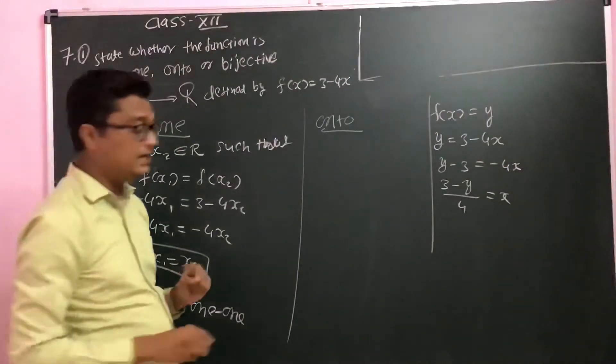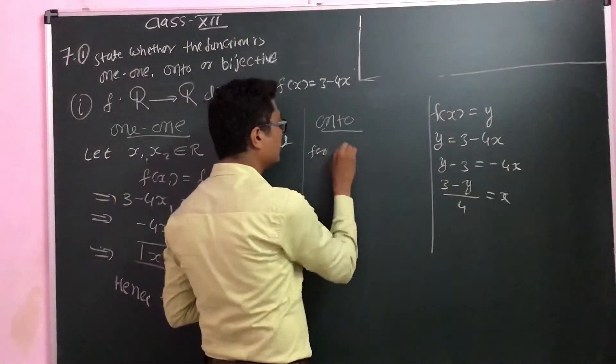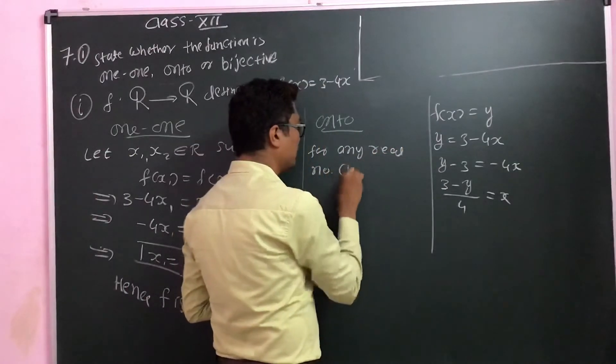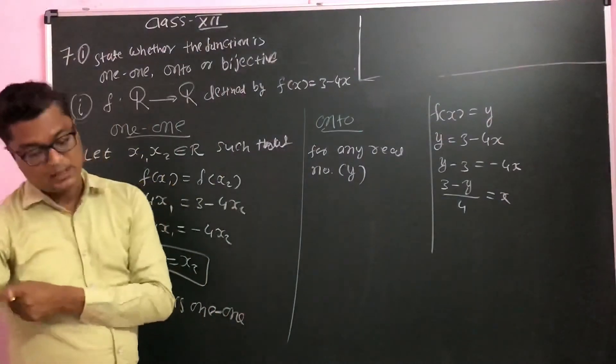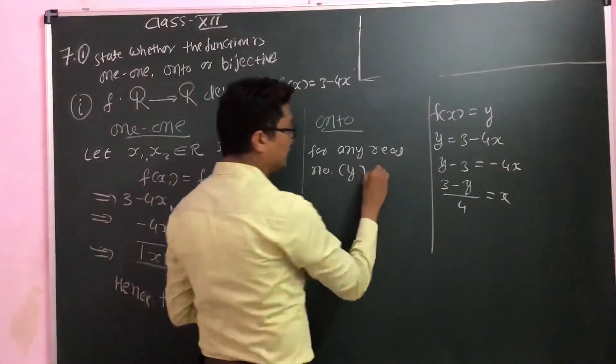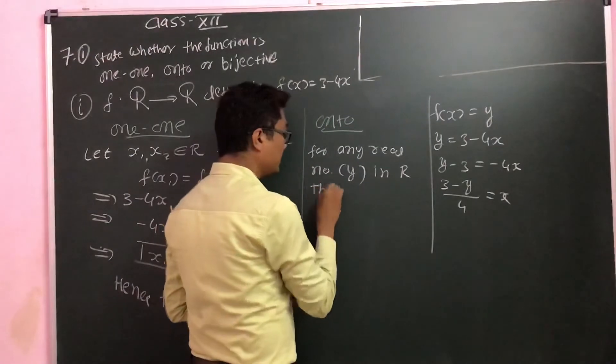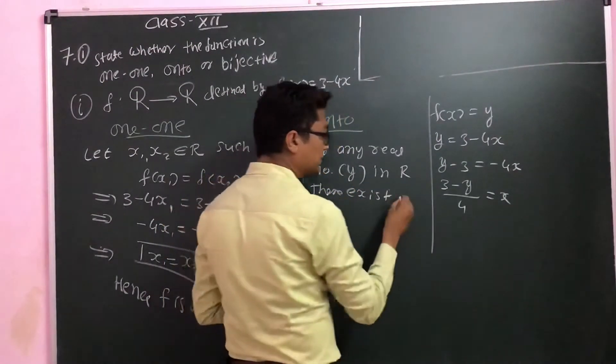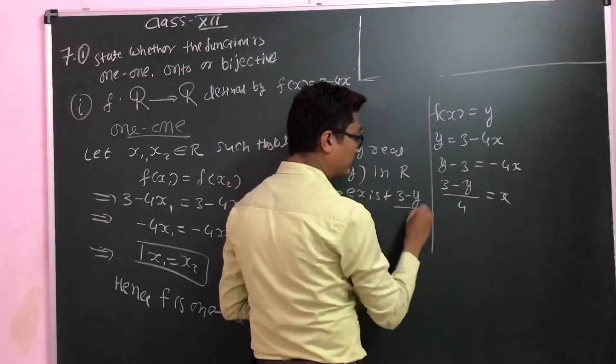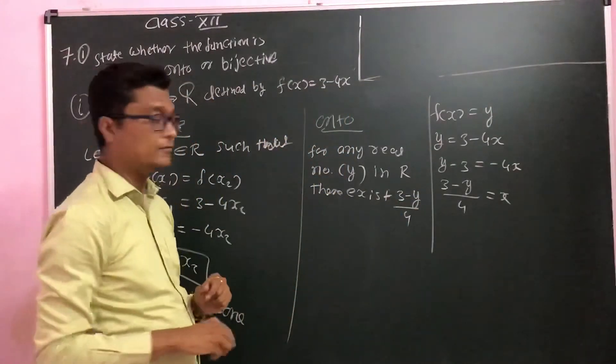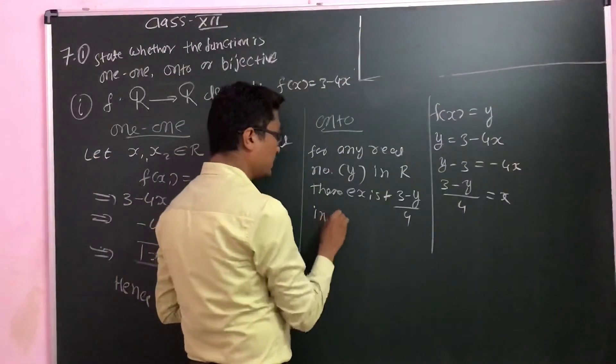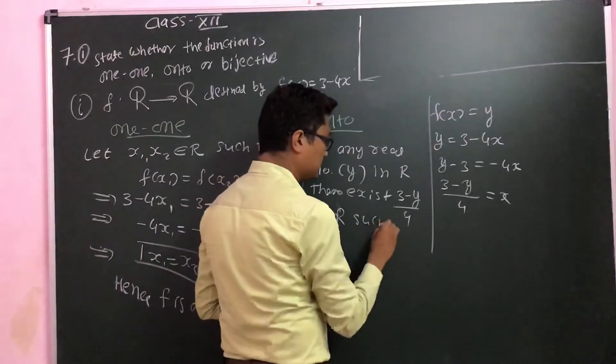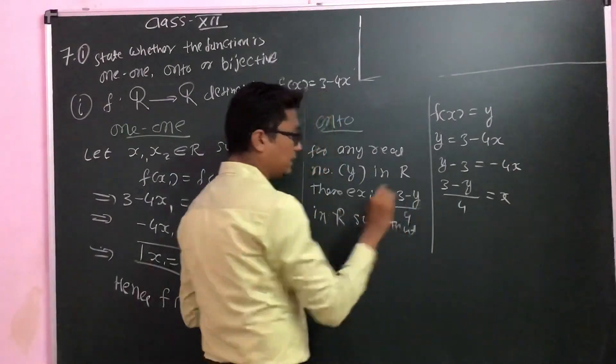What we have to write: for any real number y in R, there exists (3 minus y)/4 in R such that...